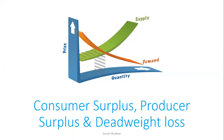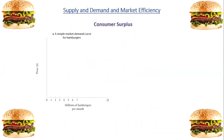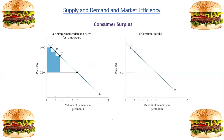So first we start with consumer surplus and we define it. Consumer surplus is the difference between the maximum amount a person is willing to pay for a good or a service and its current market price. Here we're looking at the market of hamburgers — on the x-axis we have millions of hamburgers per month, representing quantity.